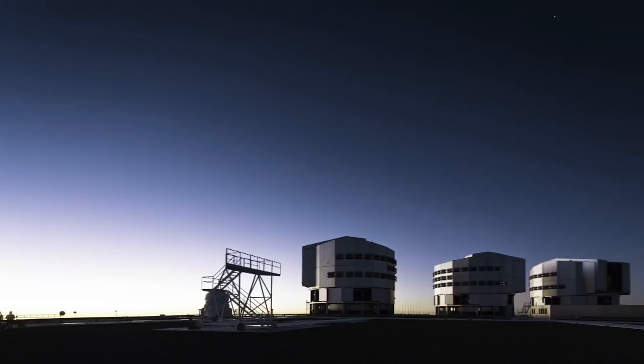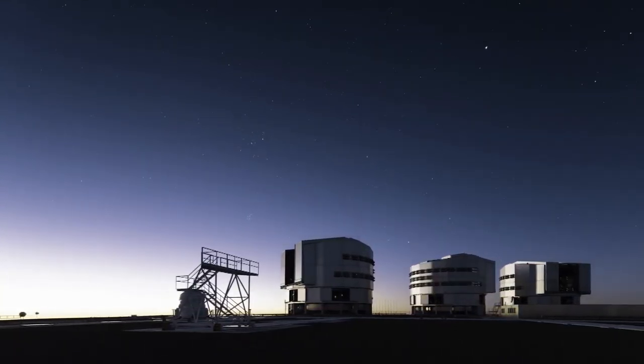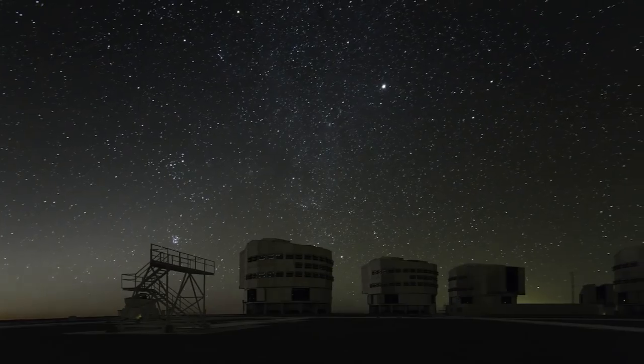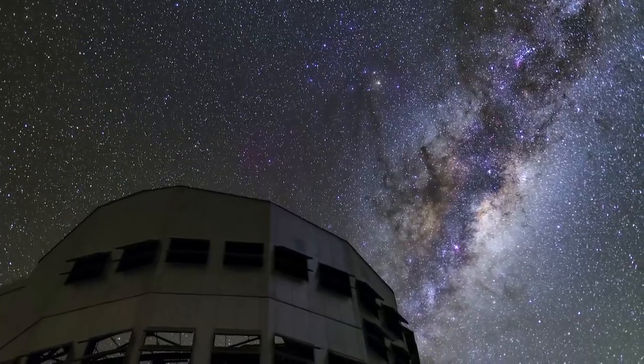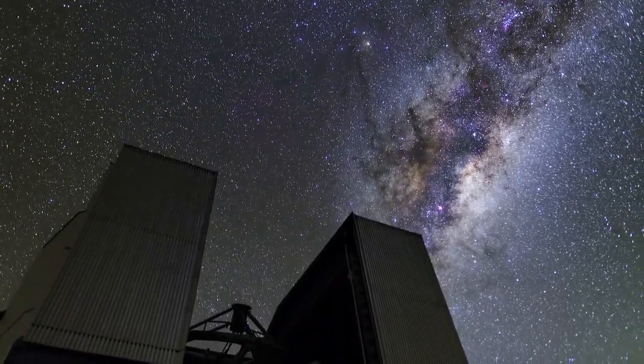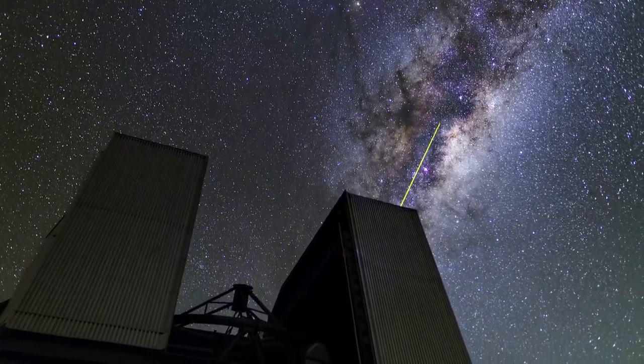Directly observing an exoplanet is a monumental feat, but one that was first achieved by ESO. The Very Large Telescope obtained the first-ever image of a planet outside the Solar System. 2M1207b is five times more massive than Jupiter. It orbits a failed star, a brown dwarf, at a distance 55 times larger than the Earth to the Sun.